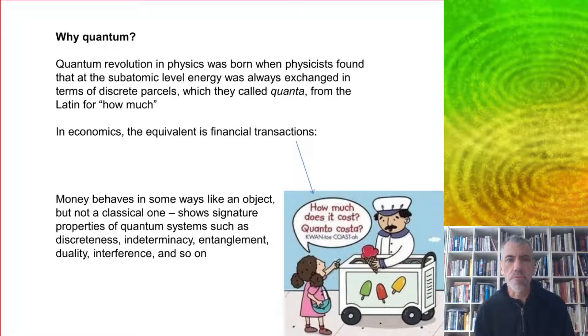So why quantum in the first place? Quantum revolution in physics was born when physicists found that at the subatomic level energy was always exchanged in terms of discrete parcels, which they called quanta from the Latin for how much. In economics the equivalent is financial transactions like when you buy an ice cream in Italy and you say quanto costa, which makes the quantum connection a little clearer.